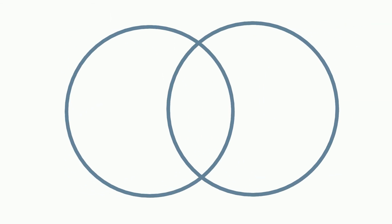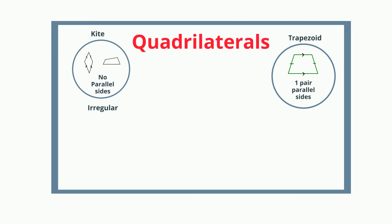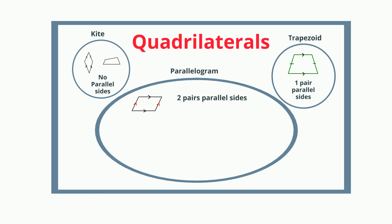Another way you can look at this is using a Venn diagram. You have quadrilaterals. A quadrilateral with no parallel sides would be a kite. A trapezoid has one pair of parallel sides. Now you move into the parallelogram, which has two pairs of parallel sides.